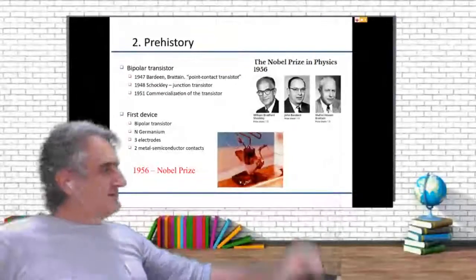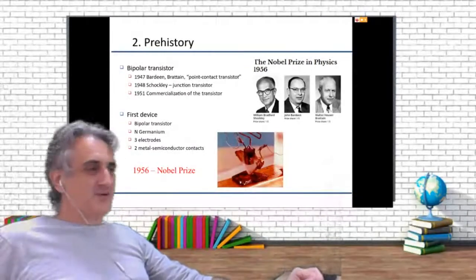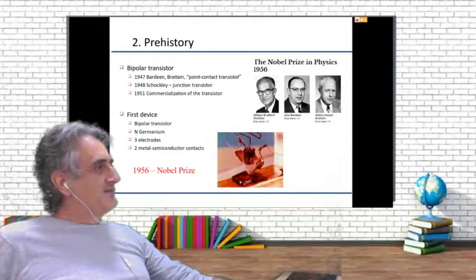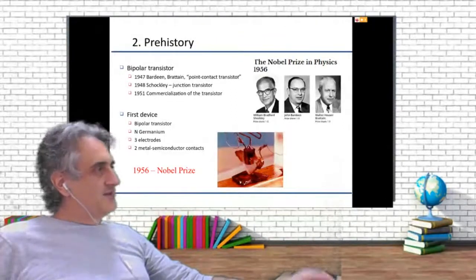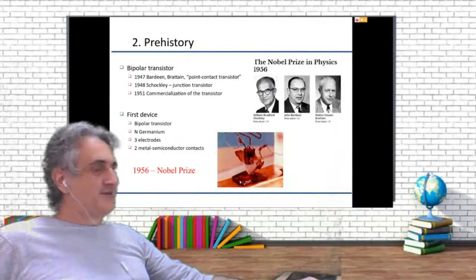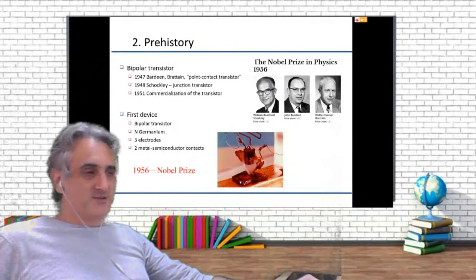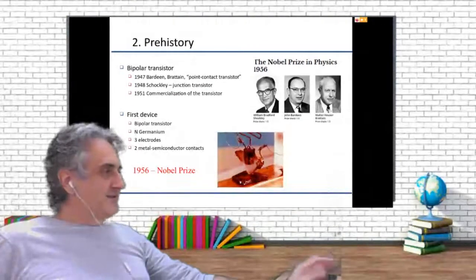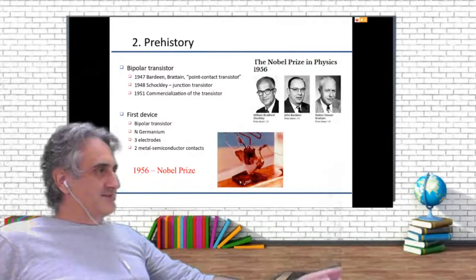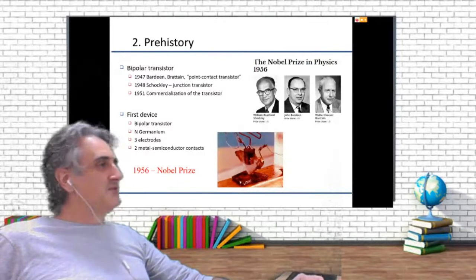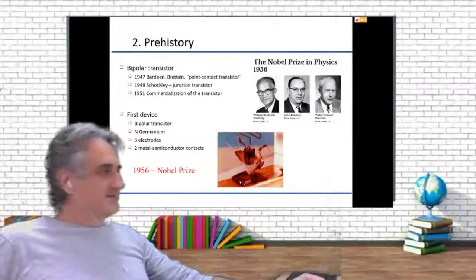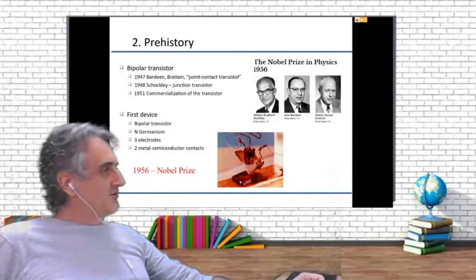Then Shockley was quite upset about that. Anyway, in 1947 they discovered that, and then one year later Shockley discovered the junction transistor, which is what we are using right now. This led to a Nobel Prize, which was shared between the three of them. Quite nice.